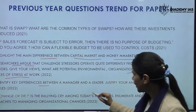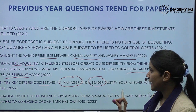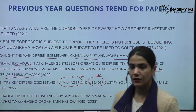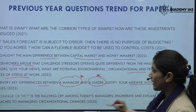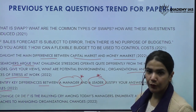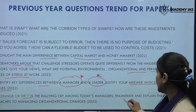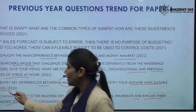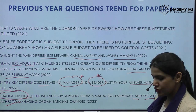They also asked a direct question about the difference between a manager and a leader — very understandable for a student who knows the key distinction. The role of a manager is part of leadership, but there is a key difference between the two — you have to justify the answer with suitable examples. The last question for Paper 1 we discuss today is: 'Change or die — the rallying cry among today's managers' — enumerate and explain three approaches to managing organizational change.